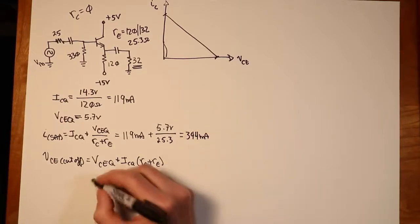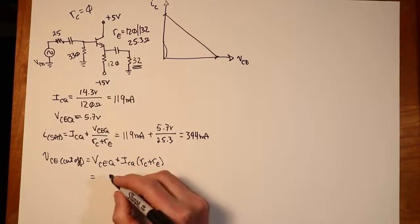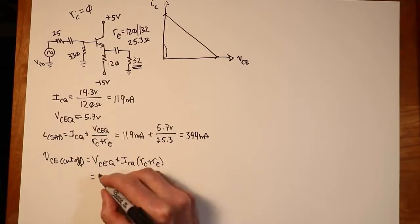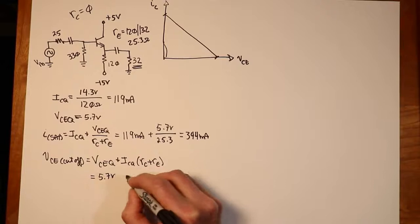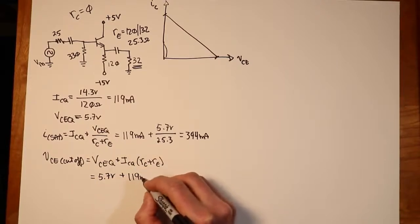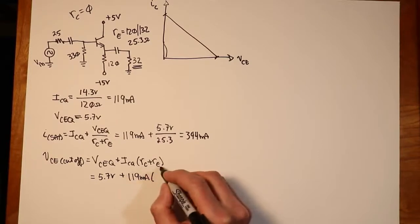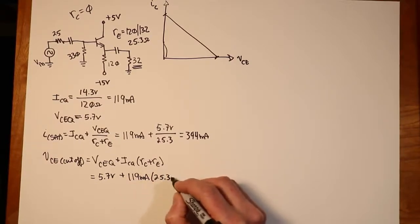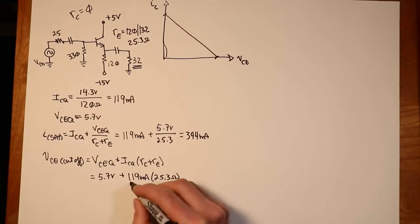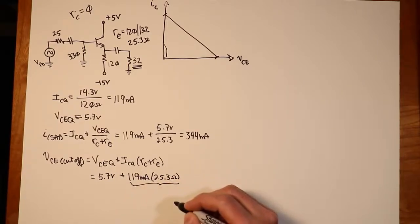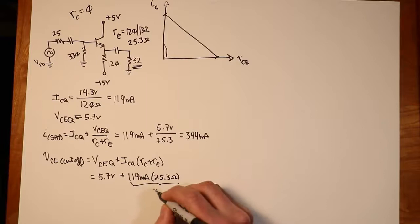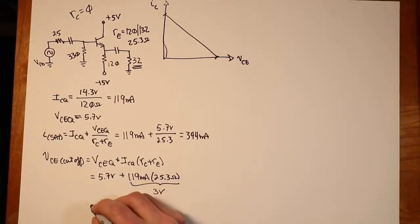Continuing back here, when we calculate through this whole thing, we get 344 milliamps for that. Back over here for the cutoff voltage, VCEQ we know is 5.7. ICQ is 119. And again, 0 plus 25.3. This piece will work out to approximately 3 volts. So the whole thing works out to 8.7 volts.